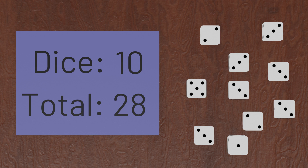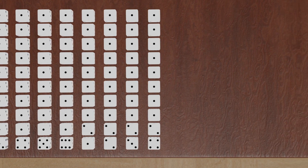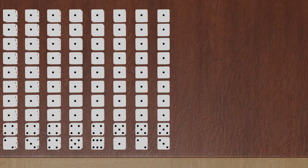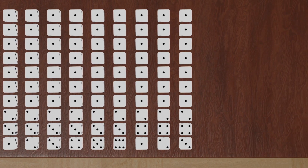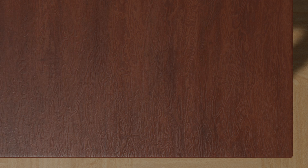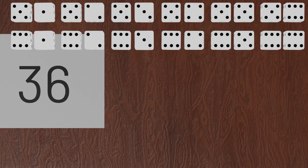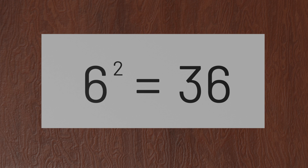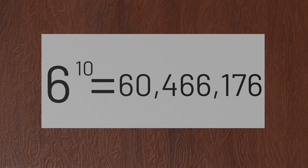Whenever we're given a problem like this, it can be helpful to start with the most obvious solution. In this case, if we want to know how many ways there are to roll 10 dice and get a total of 28, we can list out all of the ways to roll 10 dice and just count how many of them total 28. This is a correct solution, but it's not a particularly efficient one. It'll be fine with two dice, where there are only 36 possible ways to roll — 6 raised to the power of 2. But with 10 dice, the total number of possible rolls is 6 raised to the power of 10, which turns out to be more than 60 million.